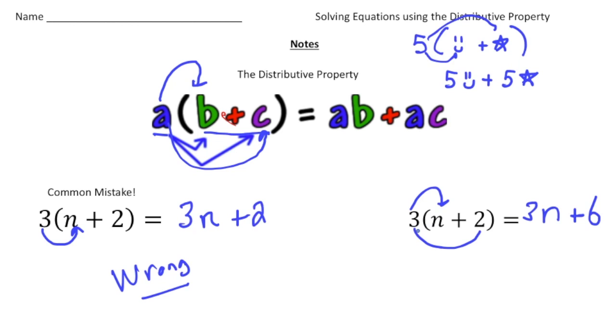Another way to show this to you is if I have three groups of n plus two, well, I could say n plus two plus n plus two plus n plus two. And when I add the n's, n plus n plus n gives you three n. And two plus two plus two gives you the six.